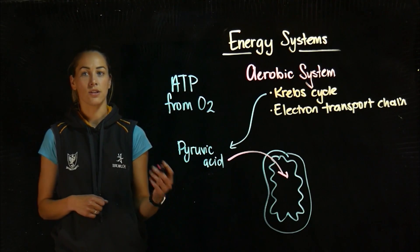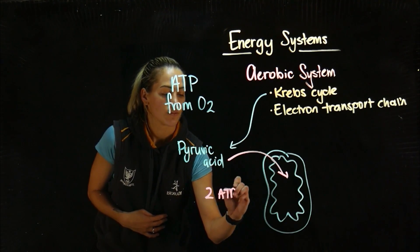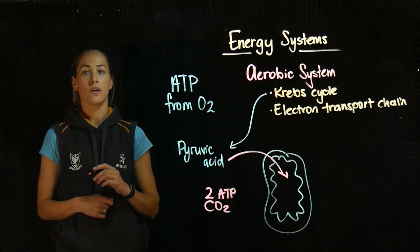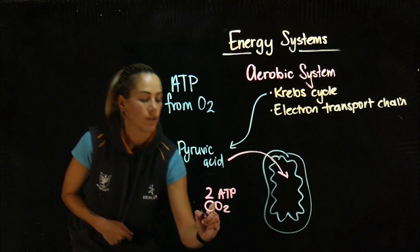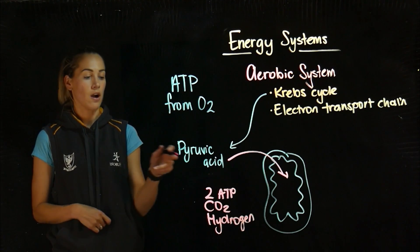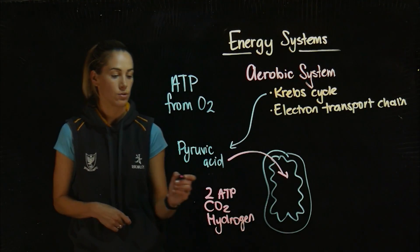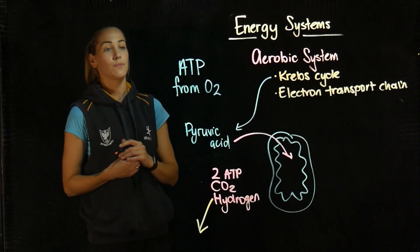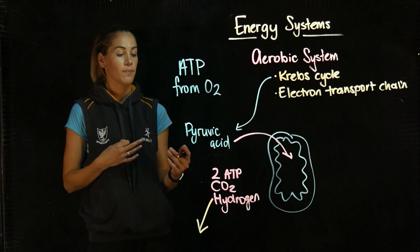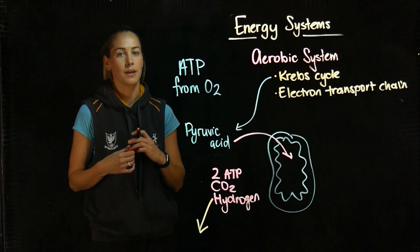Chemical reactions are occurring which result in two molecules of ATP, carbon dioxide, and hydrogen. That hydrogen is then taken to the electron transport chain. The electron transport chain still takes place within the mitochondria and results in 34 molecules of ATP.